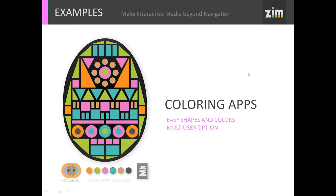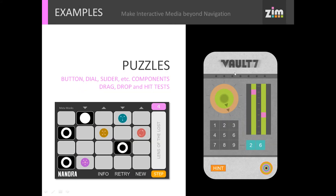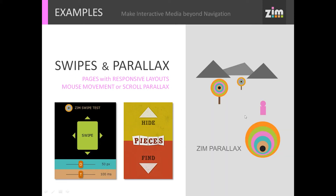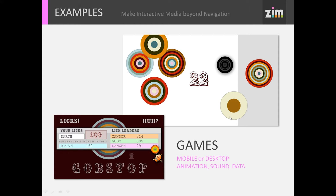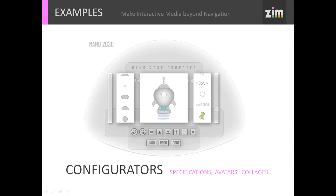Here are the types of things we can make. We can make coloring apps, and this is even for multi-user so you can collectively color together. We can do dynamic drawing, pixel drawings, or smooth ribbons with damping. We can make puzzles with buttons and dials and sliders — all these components — and we can drag and drop things and do hit tests. We can swipe things and do parallax; all that moves with the mouse or with scroll. We can make games for mobile or desktop with sound and data. And animations, tweens, sequences, sprite sheets — these move and you click them and they can shoot! And moving backgrounds. Configurators for specifications — say if you want to plan your kitchen or avatars.